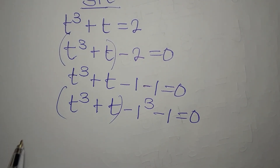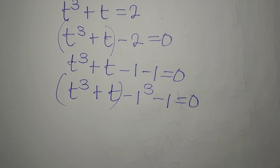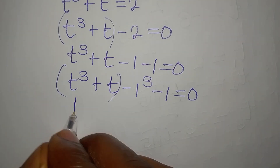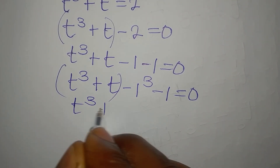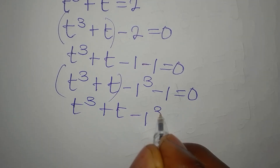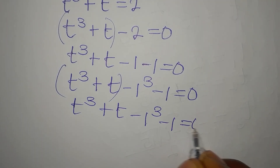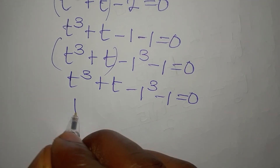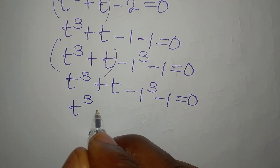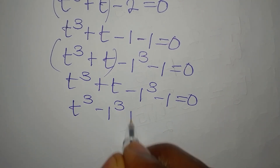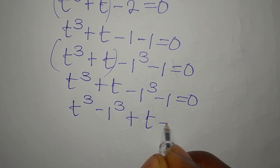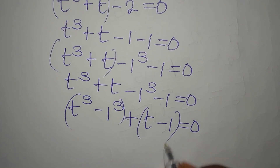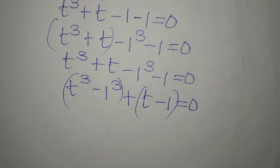Look — t cubed plus t and minus 1 cubed minus 1 now look alike. Let me write it again: t cubed plus t minus 1 cubed minus 1 equals 0. Now I want to rearrange so I get t cubed minus 1 cubed plus t minus 1 equals 0. At this point we can group what we have.